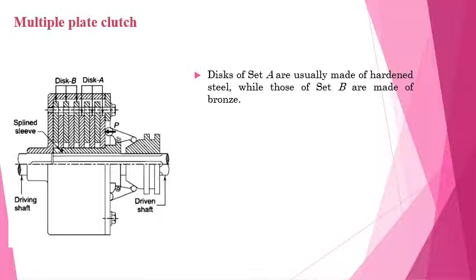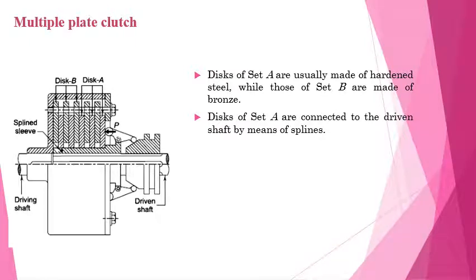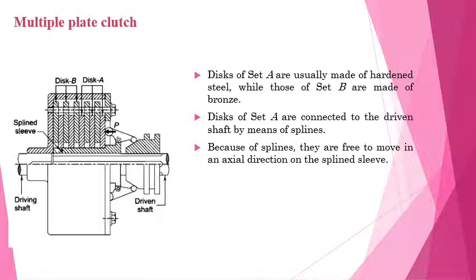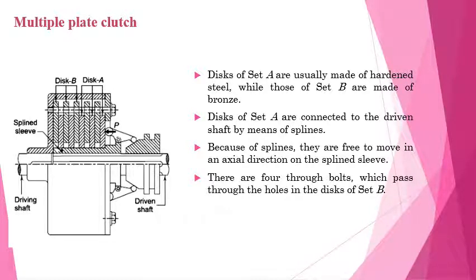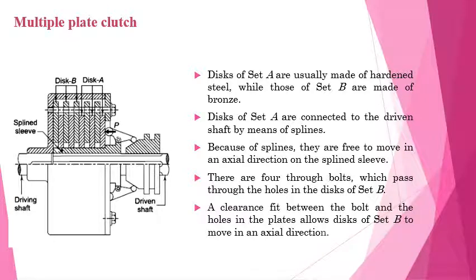As we can see from the figure, one set is referred to as Set A and the other as Set B. The discs of Set A are usually made up of hardened steel, while those of Set B are made up of bronze. The discs of Set A are connected to the driven shaft with the help of splines, so they are able to move axially on the driven shaft. There are also four through-bolts which pass through holes in the discs of Set B, with a clearance fit to allow those discs to move axially on the bolts.